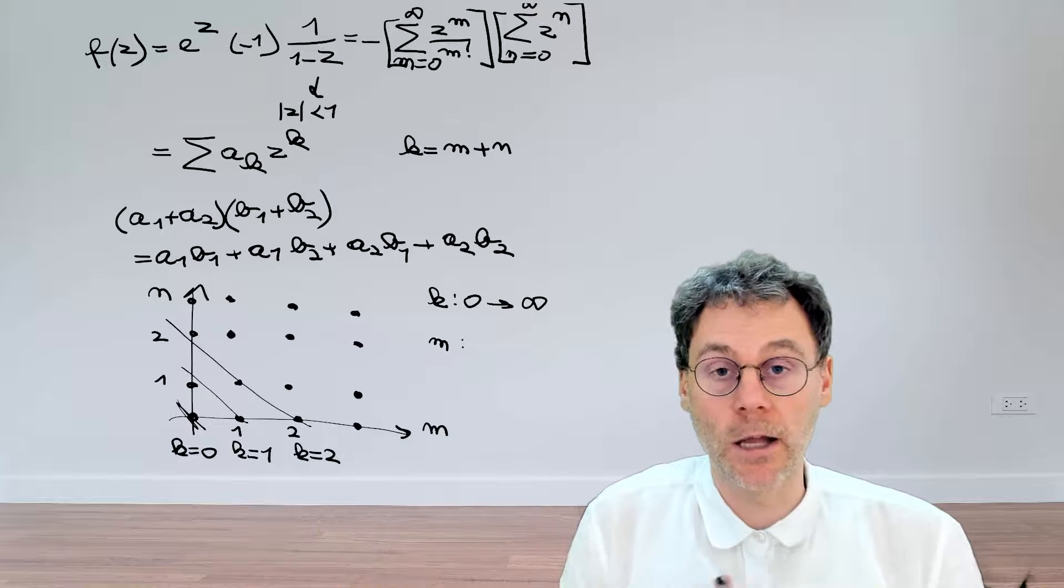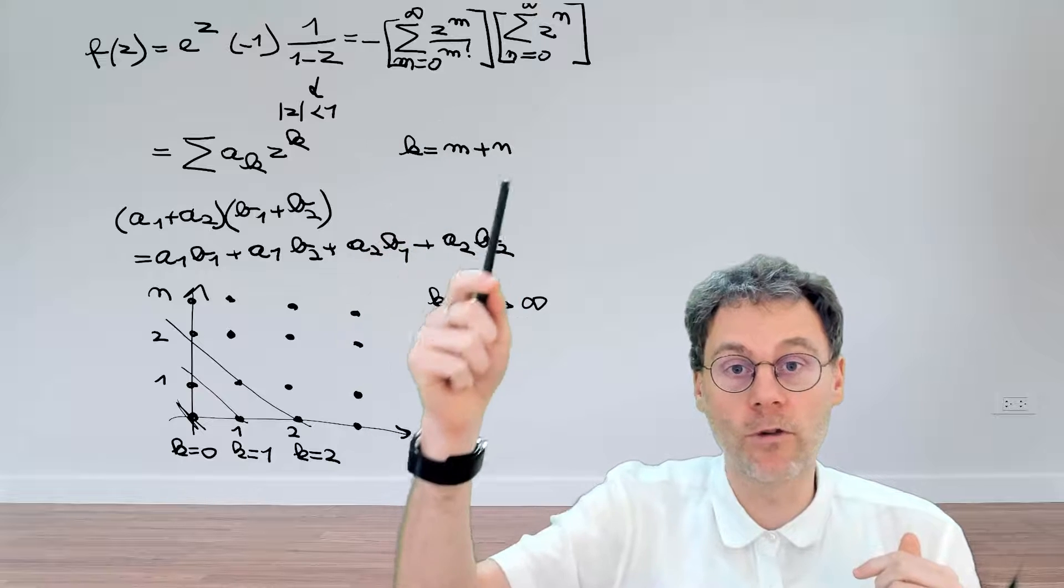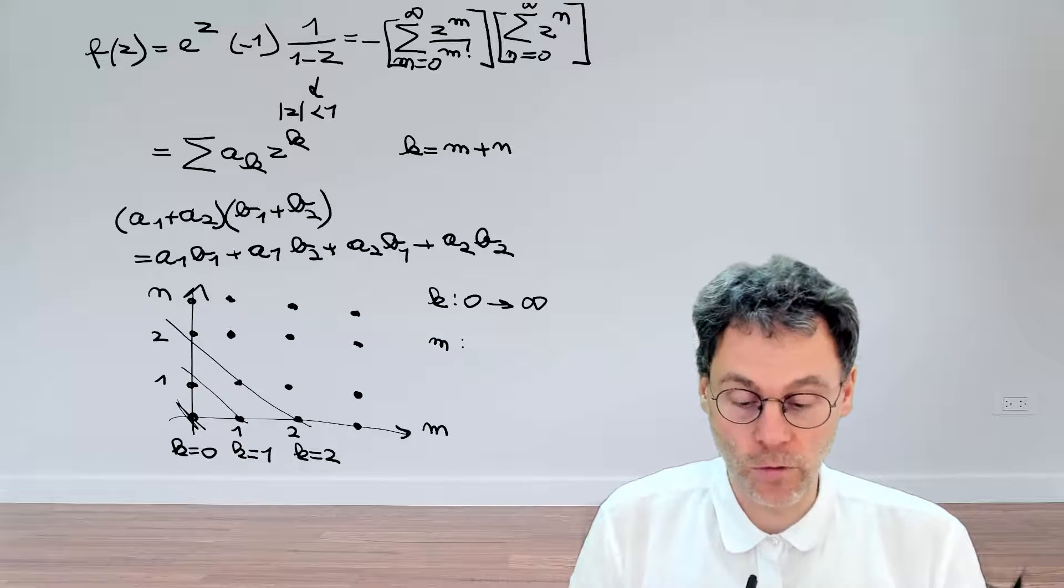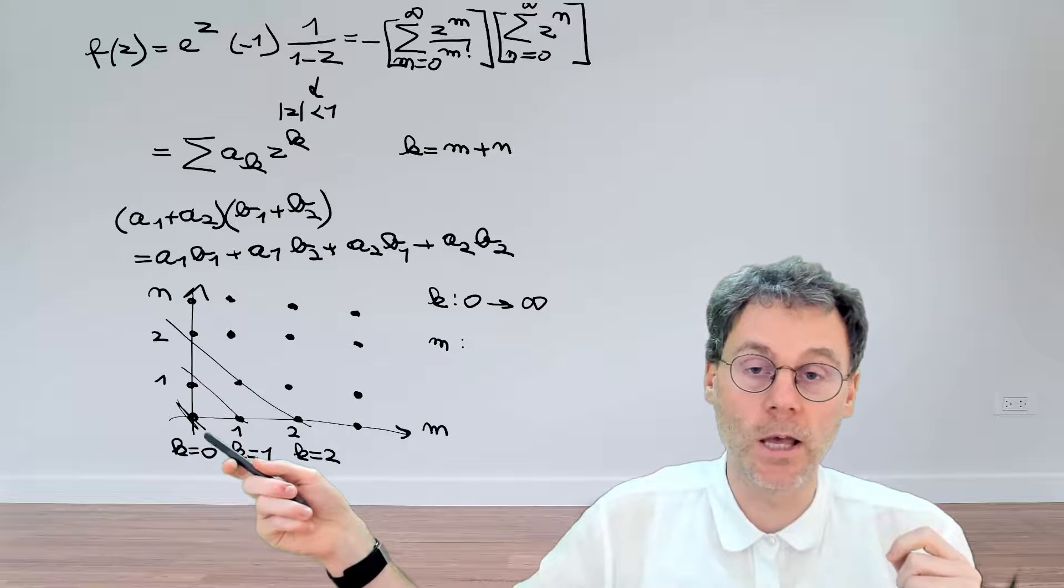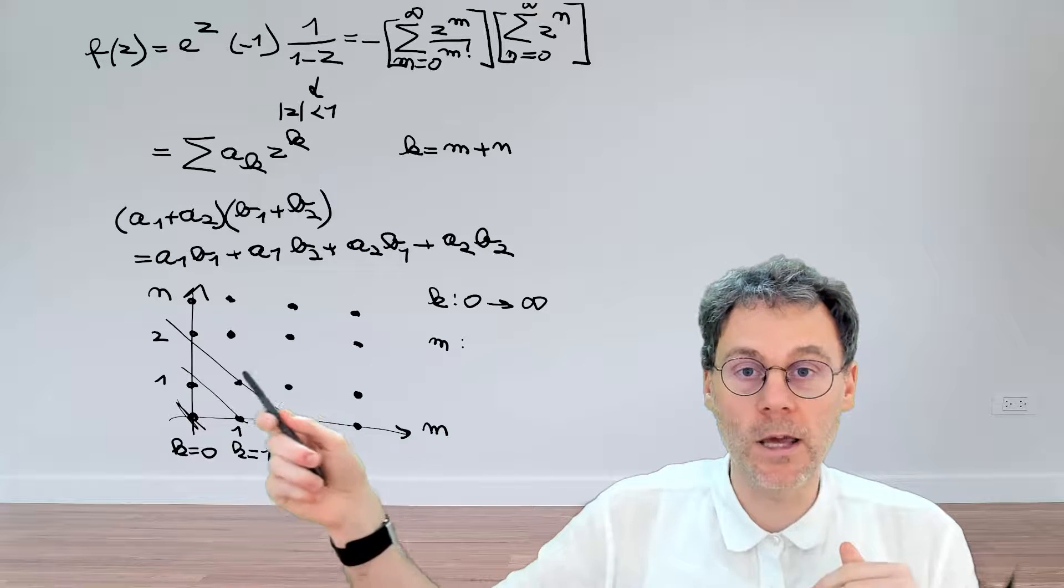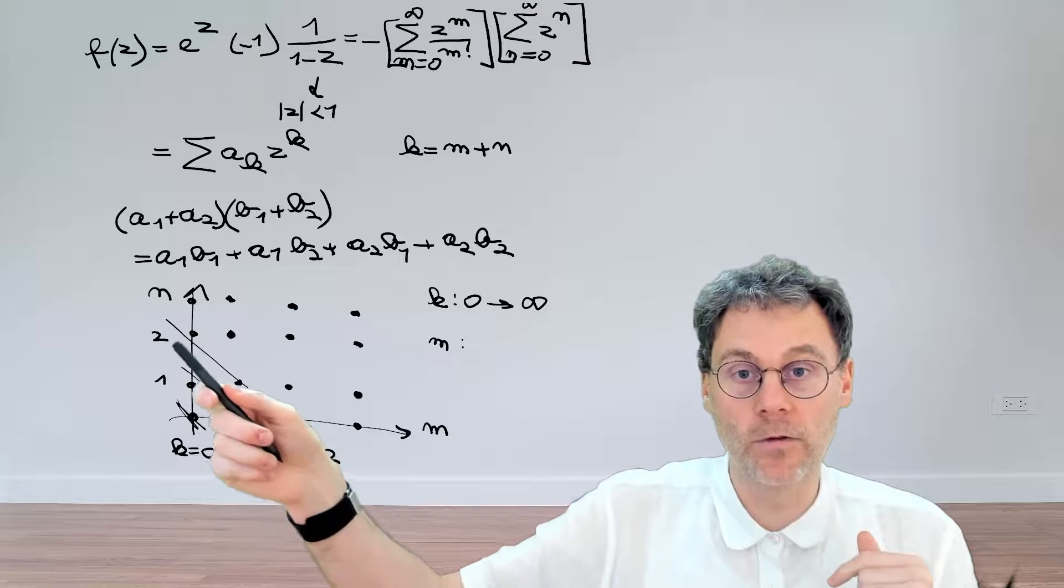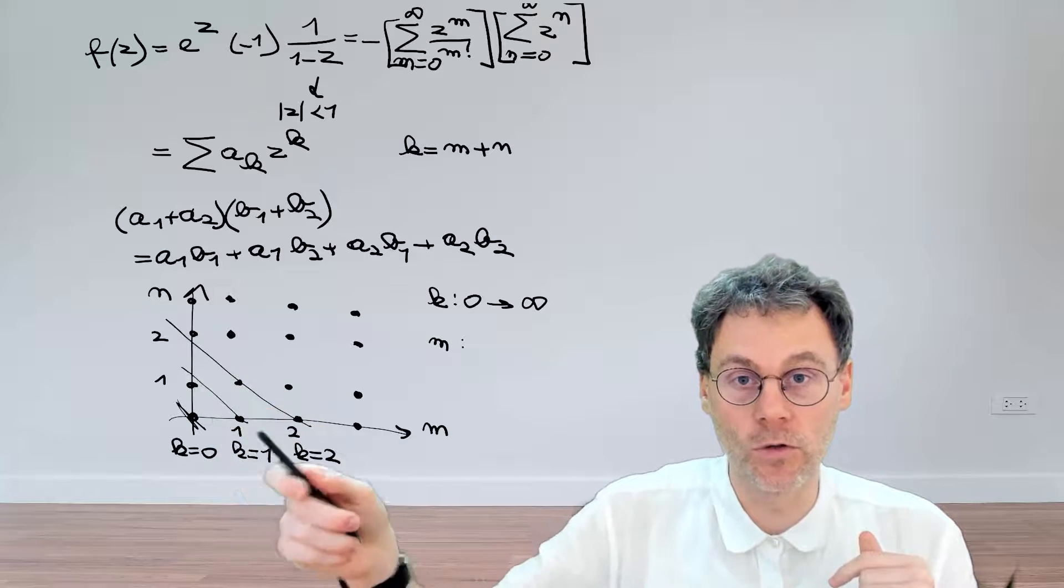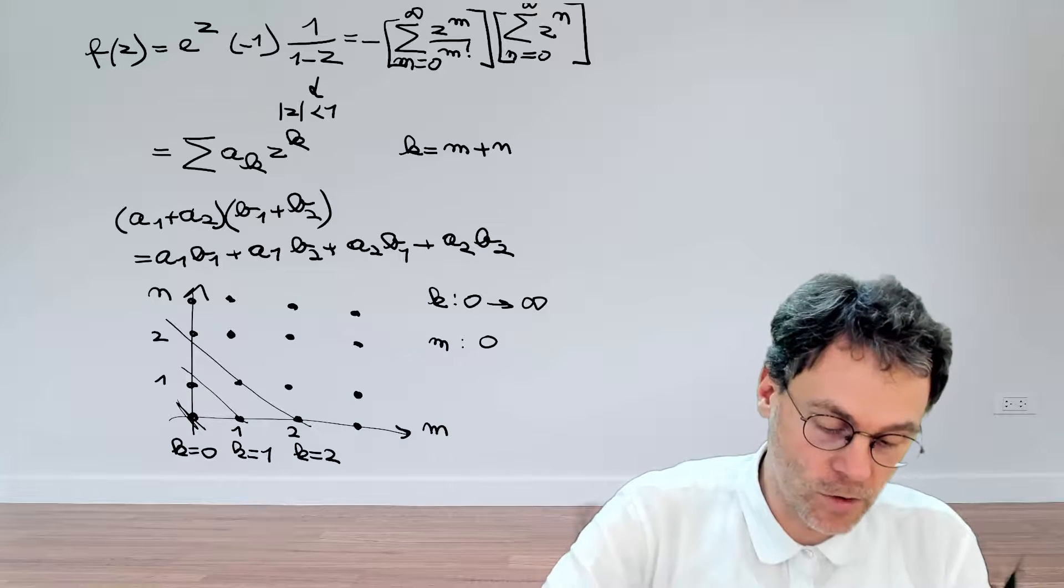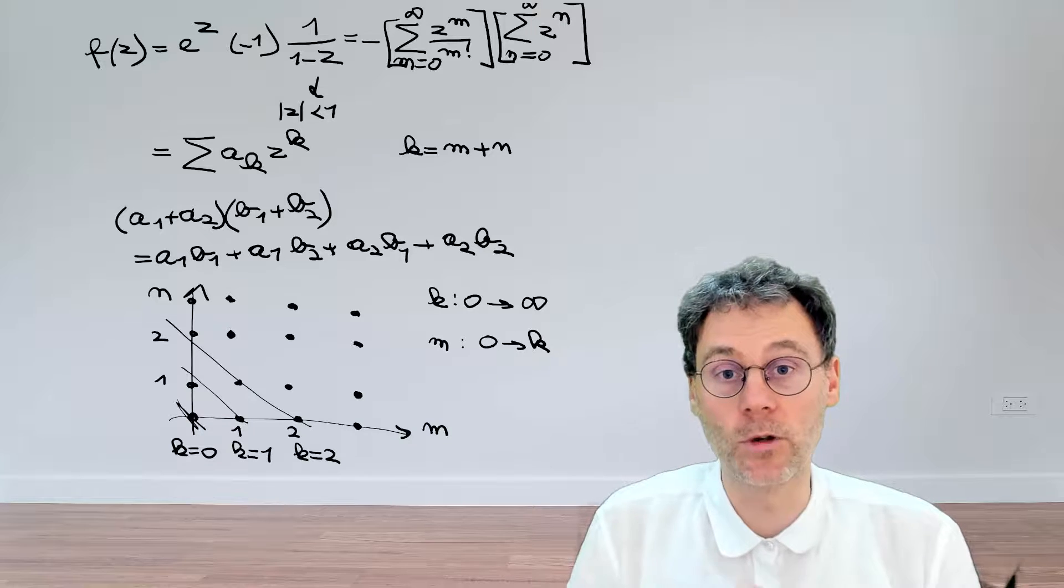So previously m and n were completely independent and they could both happily run from zero to infinity. But this time that's no longer the case because by introducing k here, we've sort of coupled m and n and also k altogether. So now in this case, if we have a certain value of k, then m will run from, let's have a look, at k equal to zero. In that case, m will run from zero to zero. So that's just one term. If we have k is equal to one, in that case, we'll see that m goes from zero to one. And for k equal to two, m will run from zero to one, two. So you see in this diagram that more in general, for a given value of k, m will actually run from zero to k. And that's how we should evaluate how we should do the bookkeeping to make sure that we don't forget any of these terms.